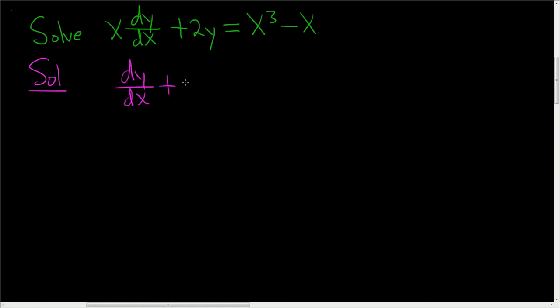So this is standard form, dy/dx plus p(x)y equals f(x). So it's not quite there yet, you have to get rid of this x. So we'll divide everything by x. So dy/dx plus dividing this by x, you get 2 over x, y, and then dividing these guys by x, you get x squared minus 1.